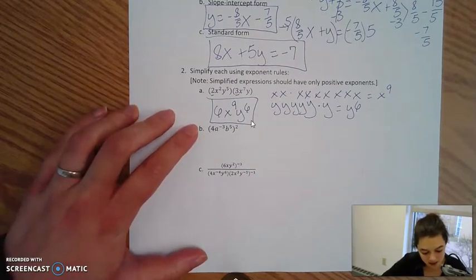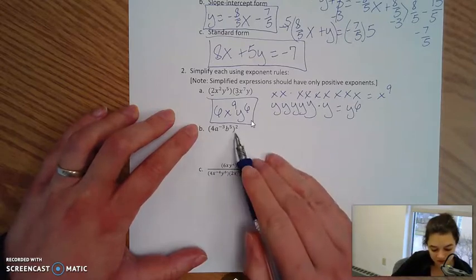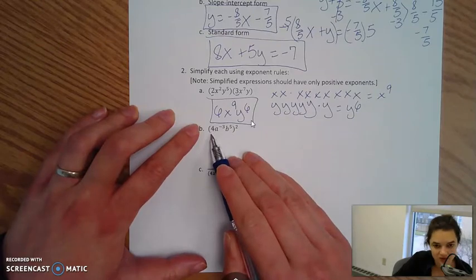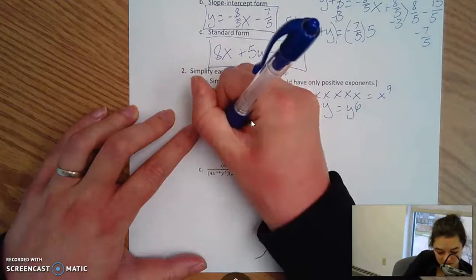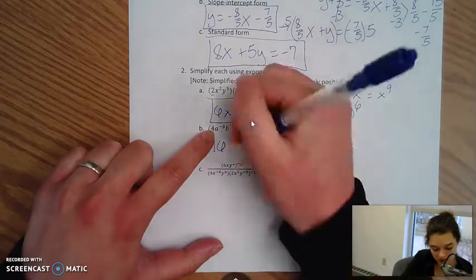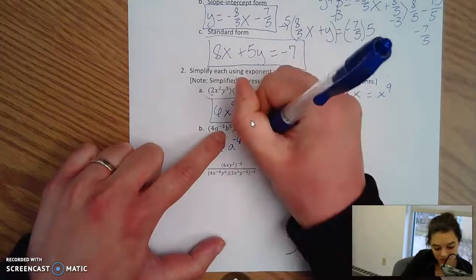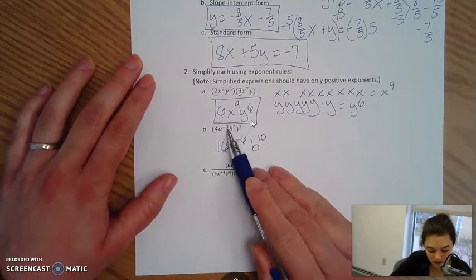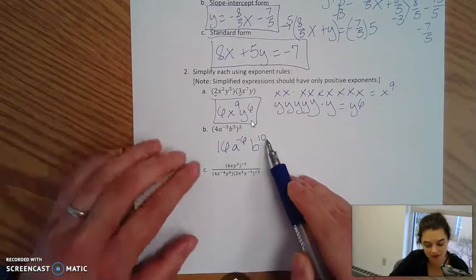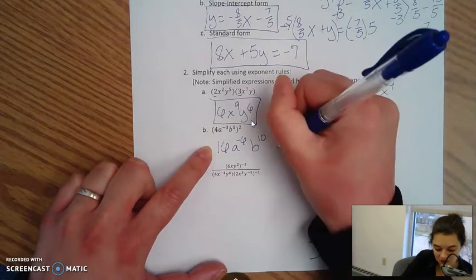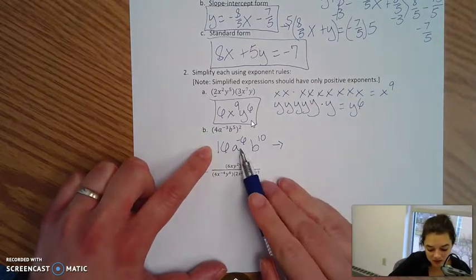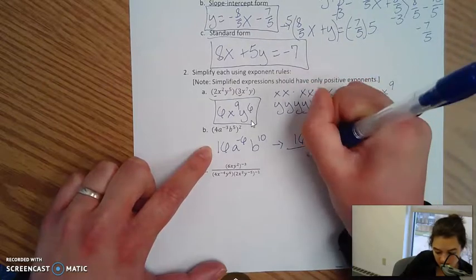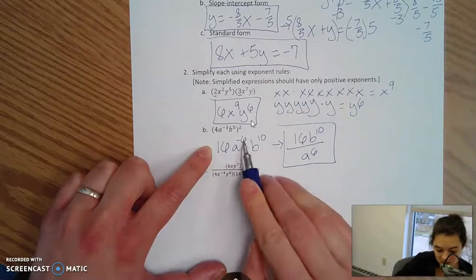For part b, we've got 4a to the negative third, b to the fifth, and the whole thing is squared. With everything being squared, it means you're squaring every single thing. You're doing 4 squared, which is 16. You're doing a to the negative third squared, which is a to the negative sixth. And b to the fifth squared, which is b to the tenth. Just reminding you — if you have an exponent raised to an exponent, you multiply them together: negative 3 times 2 is negative 6, and 5 times 2 is 10. The last thing we need to do is deal with the negative exponent — a negative exponent means it's in the wrong place and needs to be moved to the denominator. So we'll have 16b to the tenth in the numerator and a to the sixth in the denominator, and then we're done.